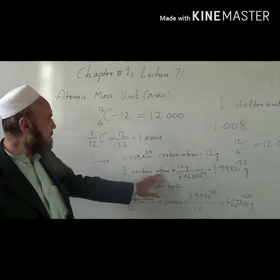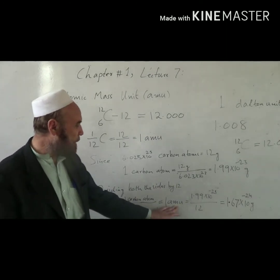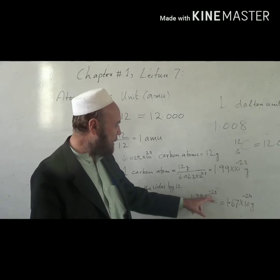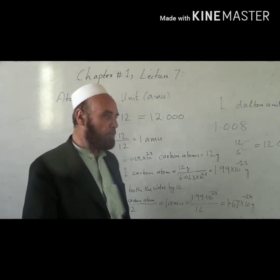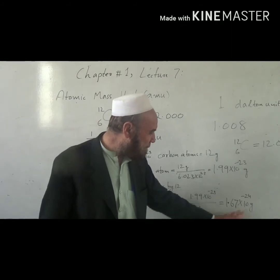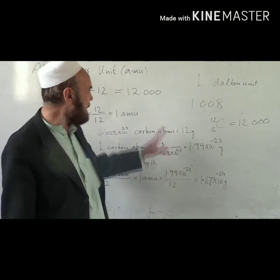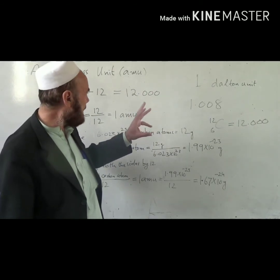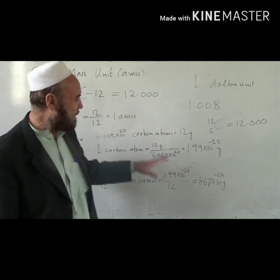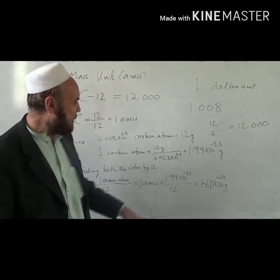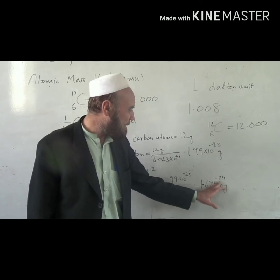One AMU can be calculated by dividing both sides by 12, because the carbon atom has a mass of 12 AMU. When 12 AMU is divided by 12, we get 1 AMU. So 1 AMU equals 1.99 × 10⁻²³ divided by 12, which gives 1.67 × 10⁻²⁴ grams — an unbelievably infinitesimal mass that we cannot imagine for an atom.